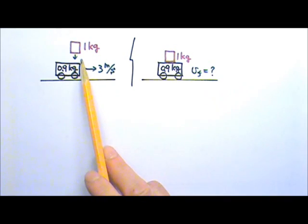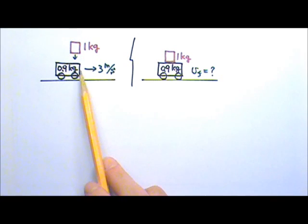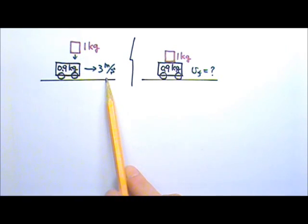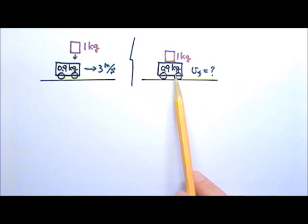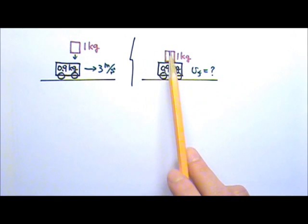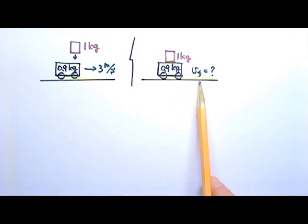A 1 kg block is dropped onto a 0.9 kg cart traveling at 3 m per second to the right. The block lands on the cart and immediately comes to rest on the cart. Find the velocity of the cart and the block immediately afterwards.